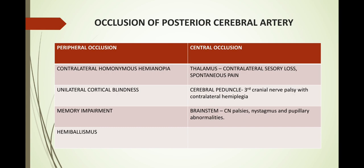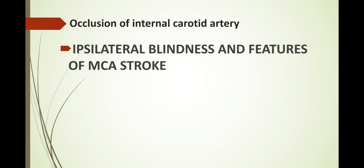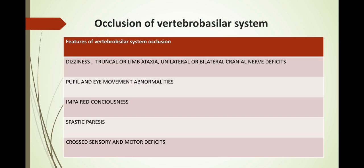Occlusion of the internal carotid artery produces ipsilateral blindness along with all features of middle cerebral artery stroke. Occlusion of the vertebrobasilar system produces dizziness, truncal or limb ataxia, unilateral or bilateral cranial nerve deficits, pupil and eye movement abnormalities, impaired consciousness, spastic paresis, and cross sensory and motor deficits. These are the most important features to mention when clinical features are asked by artery.